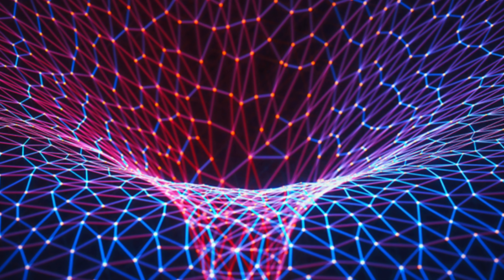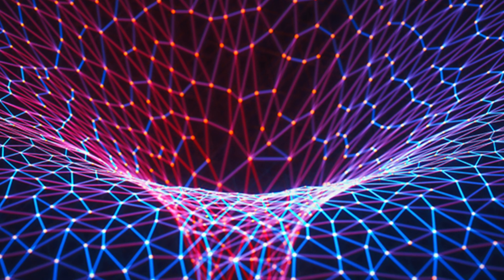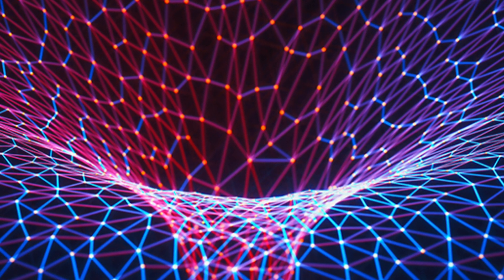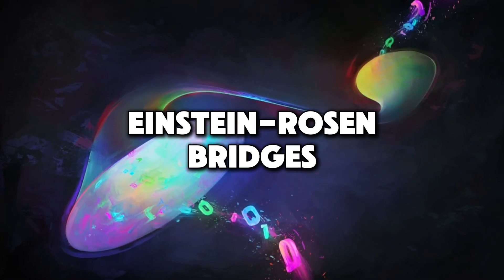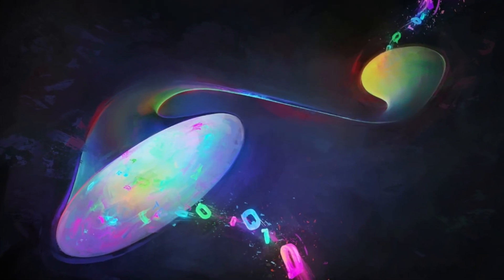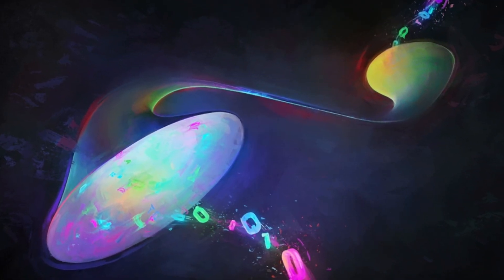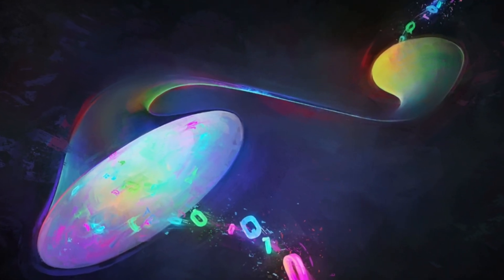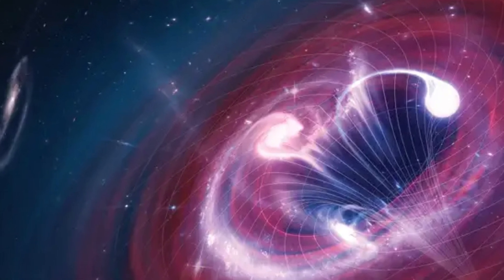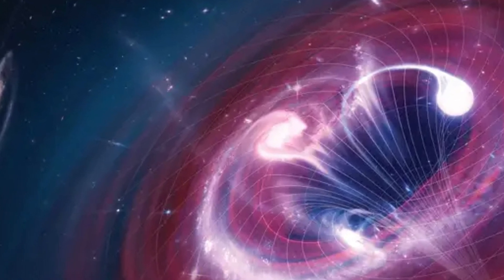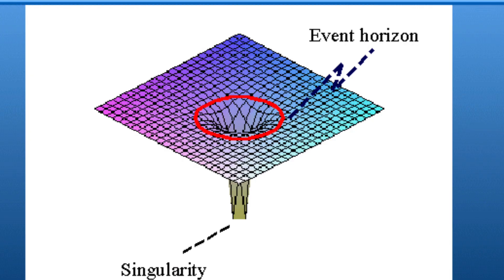Einstein-Rosen bridges were the first type of wormholes to be theoretically described. These wormholes arise as solutions to the Schwarzschild metric, which describes the spacetime geometry around a non-rotating, spherically symmetric black hole.